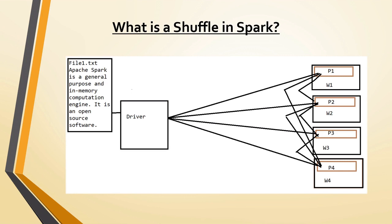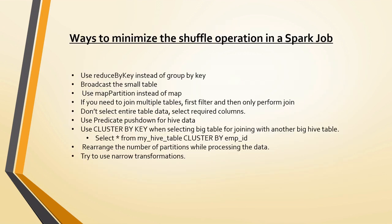This entire operation is called shuffle in Spark. Due to the data shuffle between disk and executor, performance is impacted. Now we will see what we can do to reduce shuffle and improve Spark job performance. First, use reduceByKey instead of groupByKey. As discussed, reduceByKey internally performs the task partition-wise first and then performs the reduce operation, sending results back — whereas groupByKey checks all other worker nodes multiple times.